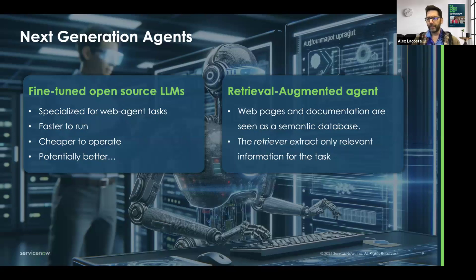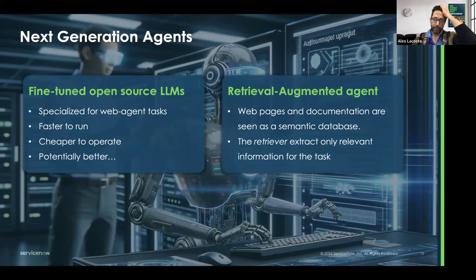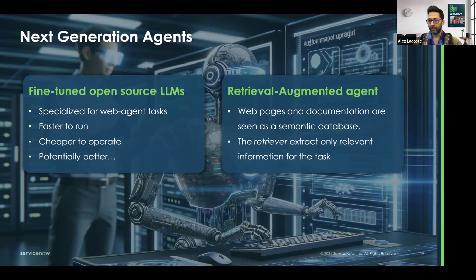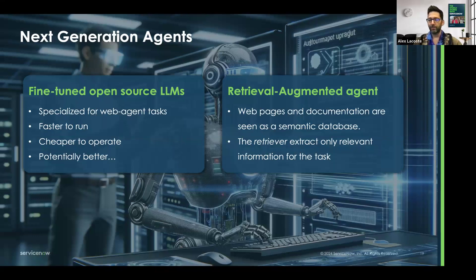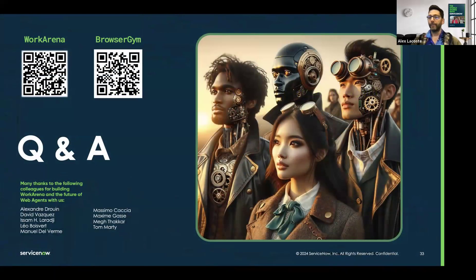Moving forward, how are we going to make our agents better? One of the first big directions is to fine-tune open-source models. By doing so, we can specialize them for web tasks, make them faster and cheaper to operate, and potentially even better than closed-source LLMs since they'll be more focused with more control over the training step. Another important direction is retrieval-augmented agents using RAG. Instead of dumping the whole webpage, you encode it in a semantic database and use retrieval techniques to bring back only the relevant information. You could even put all the documentation useful for solving the task — or eventually even YouTube videos showing how to do something on the ServiceNow platform — retrieve the important information and extract what's useful for solving the task. And at that point, the sky is the limit.